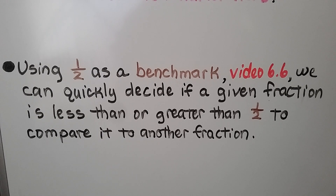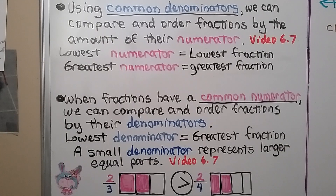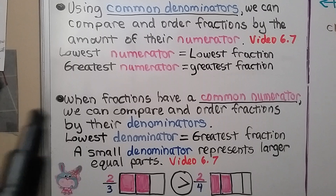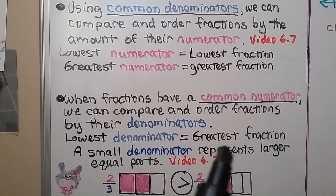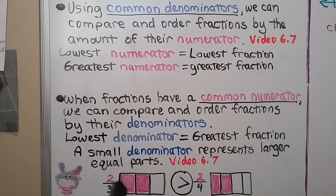Using half as a benchmark, which we learned in video 6.6, we can quickly decide if a given fraction is less than or greater than half to compare it to another fraction. Using common denominators, we can compare and order fractions by the amount of their numerator — the lowest numerator equals the lowest fraction. When fractions have a common numerator, we compare by their denominators. The lowest denominator is the greatest fraction, because a small denominator represents larger equal parts. We learned about that in video 6.7.